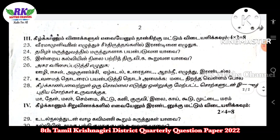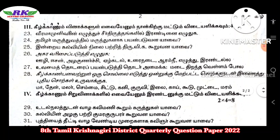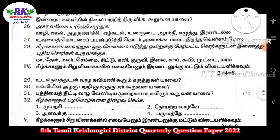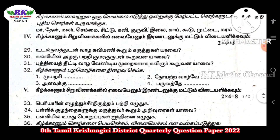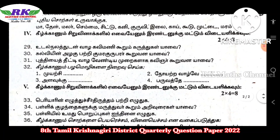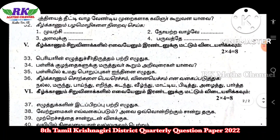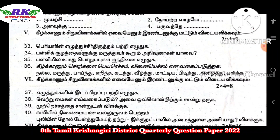Next, Roman number 3 — 4 questions, 2 marks each, 8 marks. Next, Roman number 4 — 2 questions, 4 marks each, 8 marks. Next, Roman number 5 — 2 questions, 4 marks each, 8 marks.